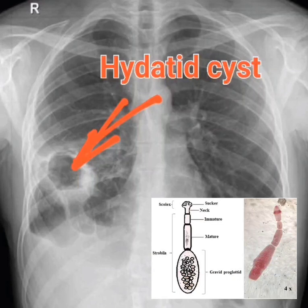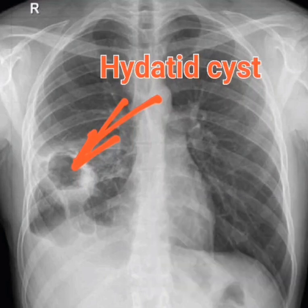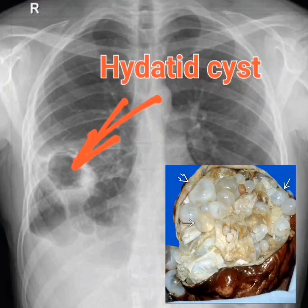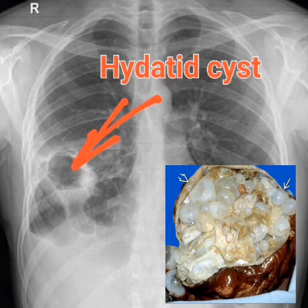Once ingested, the eggs hatch in the human's small intestine and the larvae travel to the lungs, where they develop into cysts. The cysts can grow over time and can sometimes rupture, releasing the parasites into the bloodstream. This can lead to serious complications, such as anaphylactic shock or sepsis.